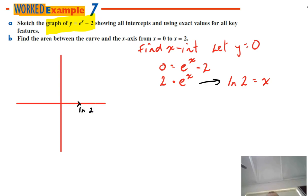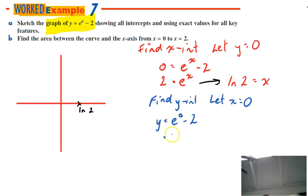Alright, so I don't use the calculator at the moment, I'm just going to use that as my exact value. Now I'm going to have to do the same, I'm going to have to find my y-intercept here by letting x equal 0. So, find y-intercept, let x equal 0. So y equals e to the 0 minus 2.